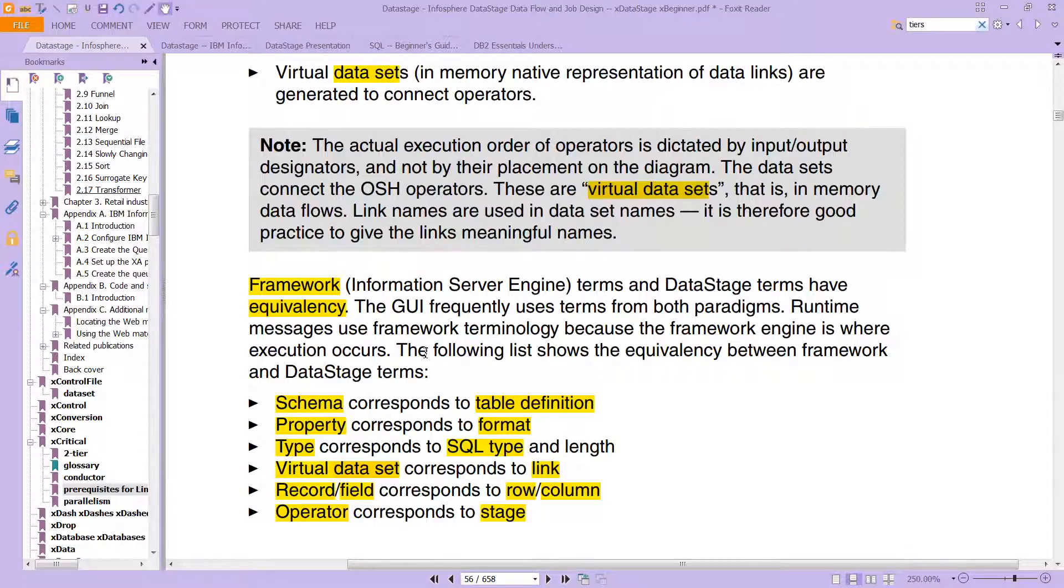So you have what's called schema, which corresponds to table definitions. We've already looked at this - these are the columns, essentially, and if they're big int and if they're nullable or if they're not nullable. We're going to work a lot with table definitions, which will save you a huge amount of time.